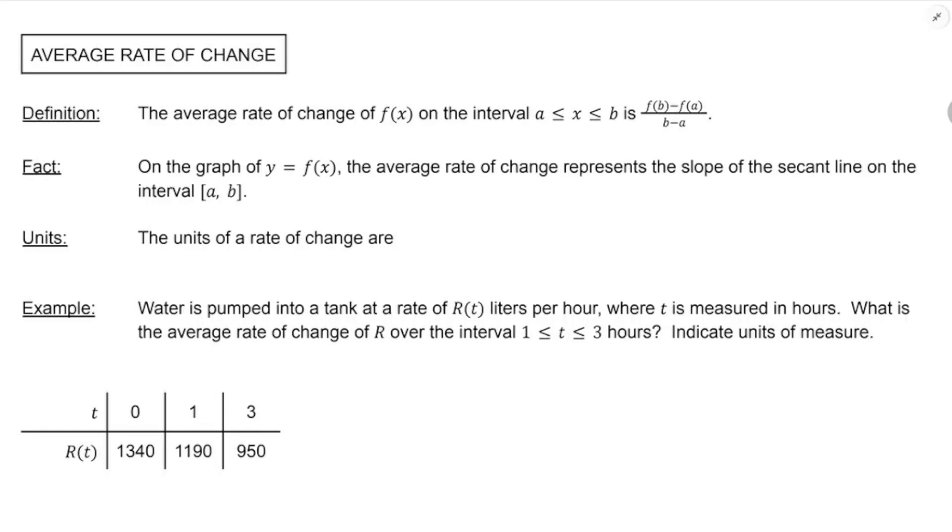That was a big point of discussion, average rate of change. But in other classes too, even all the way back to algebra one, this is the idea of slope between two points. So the average rate of change of f is still rise over run, it's still y2 minus y1 over x2 minus x1, but now we're talking about functions, we're a little older, more advanced, we're going to use f of b minus f of a divided by b minus a.